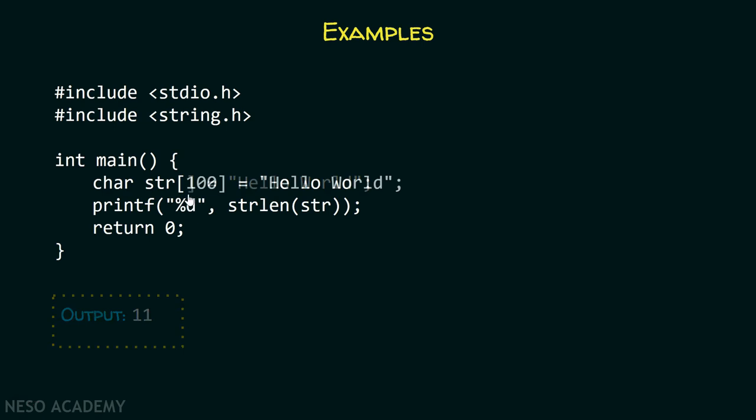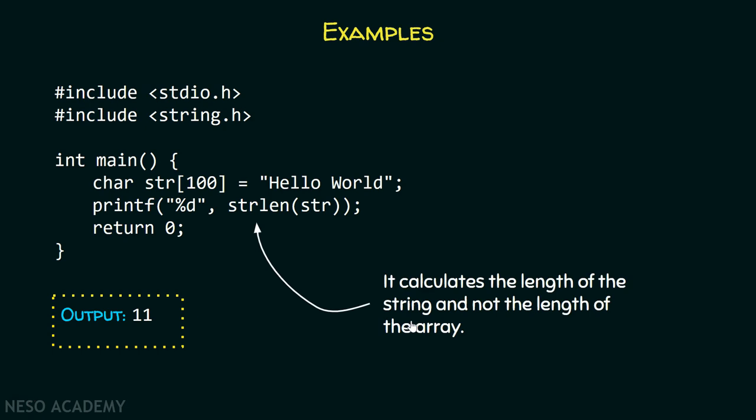But what if I add 100 here? You might think the output will be 100 because the size of this array is 100. But again it will return 11. Why is that so?